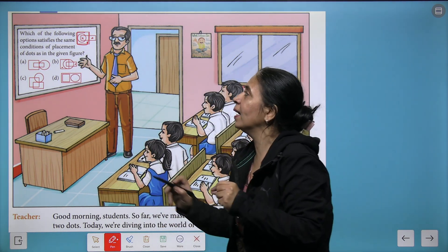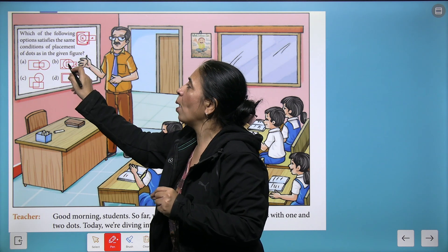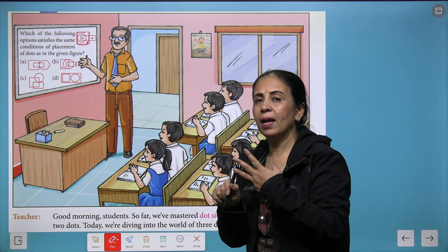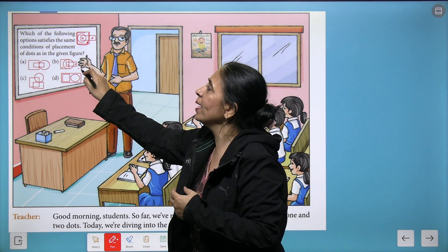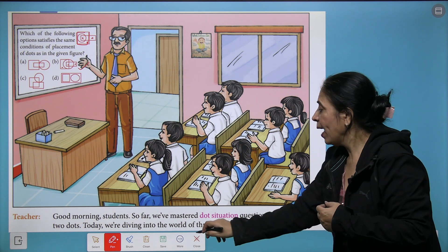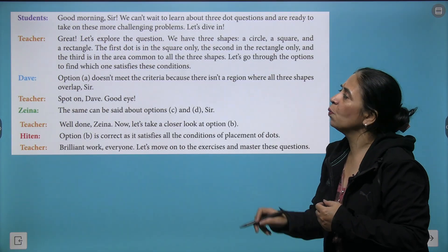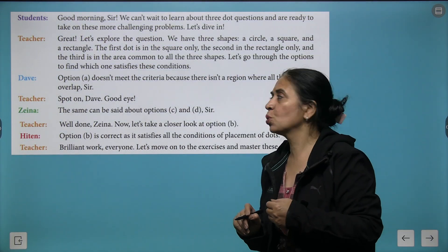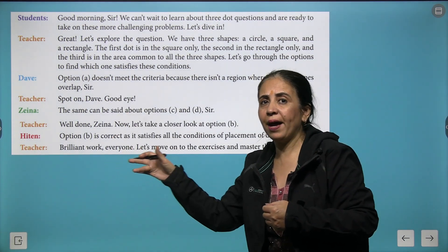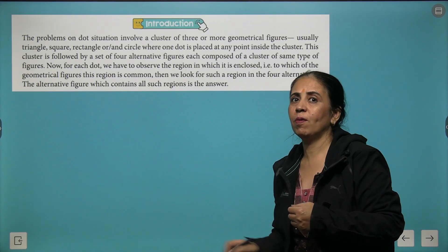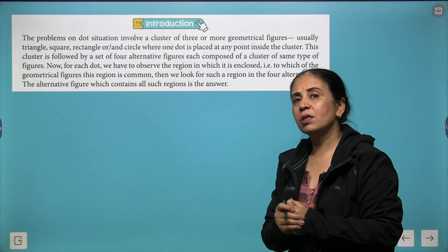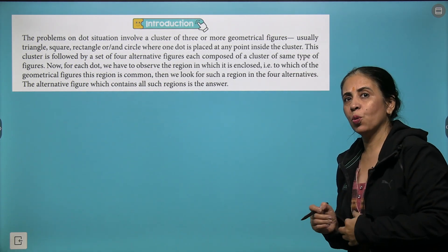So we can try one dot which exists only in the rectangle, and this is the common part of square, circle, and rectangle. That means you get option B as the correct option. The same method was followed by the students in the class, and Dave and Zaina were able to resolve the given problem.